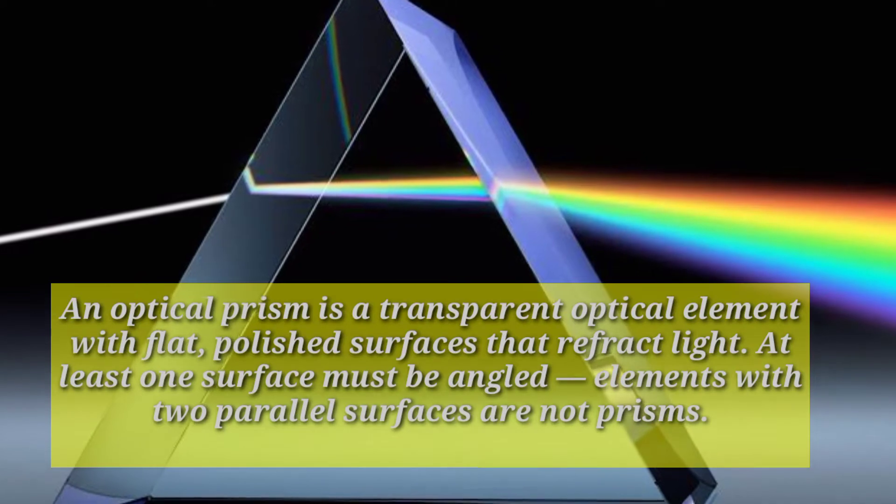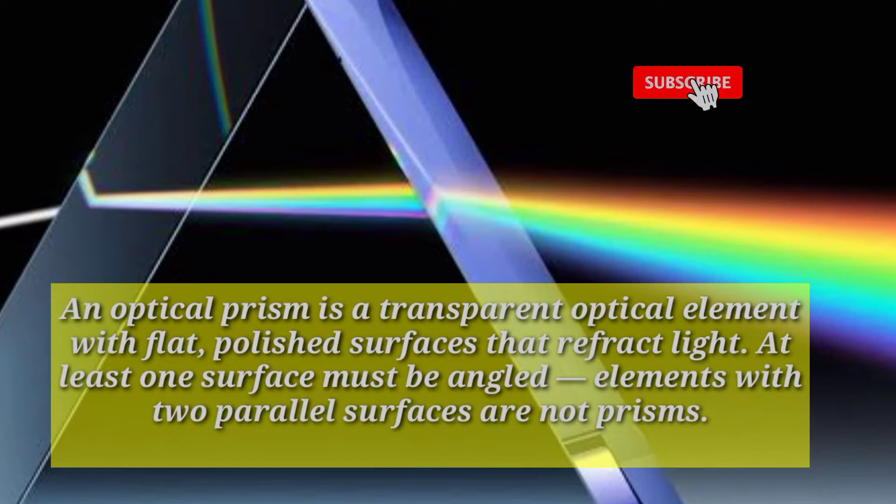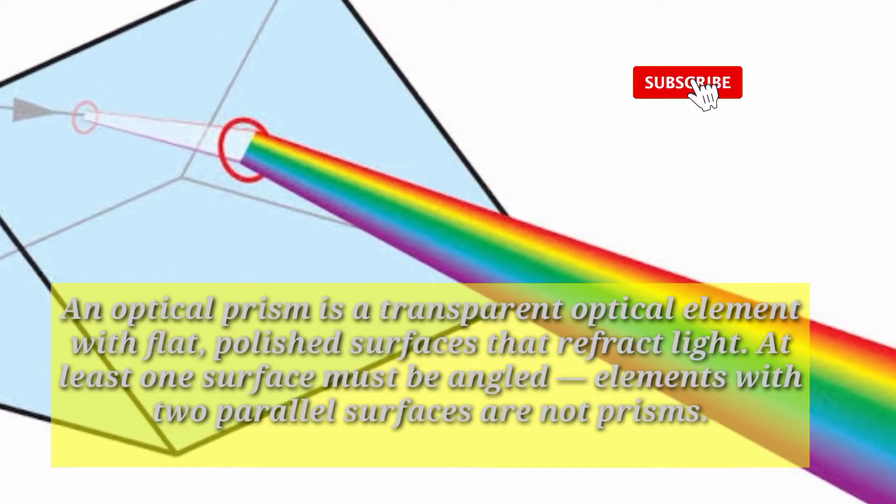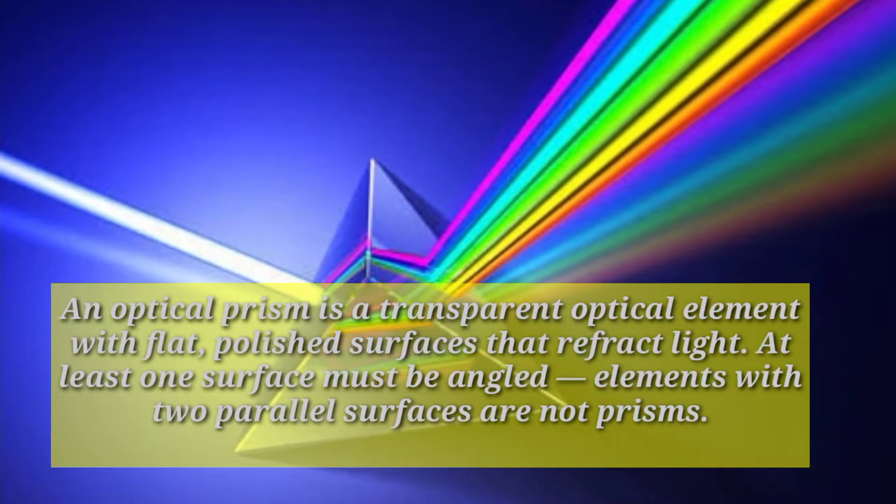An optical prism is a transparent optical element with flat, polished surfaces that refract light. At least one surface must be angled. Elements with two parallel surfaces are not prisms.